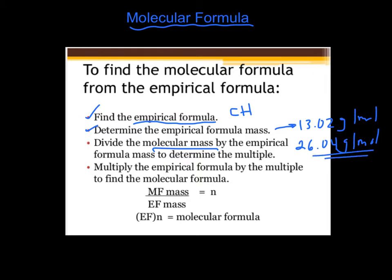So then you take the molecular formula's mass, 26.04, and divide it by the empirical formula's mass. And you will always get a whole number. If you don't get a whole number, you goofed it up. So I take that whole number and multiply it by my empirical formula. So my real formula is C2H2.